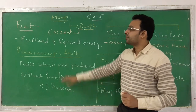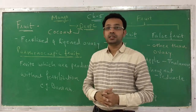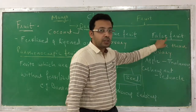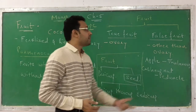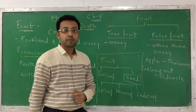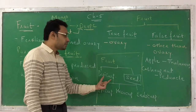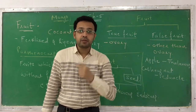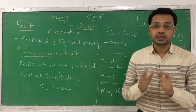In summary: a fruit is the fertilized and ripened ovary. If produced without fertilization, it is called a parthenocarpic fruit. Fruits can be two types — true fruit (develops from ovary) and false fruit (develops from parts other than ovary), like apple and cashew nut. The fruit consists of two parts: pericarp and seed. The pericarp is divided into three layers: outermost epicarp, middle mesocarp, and innermost endocarp.